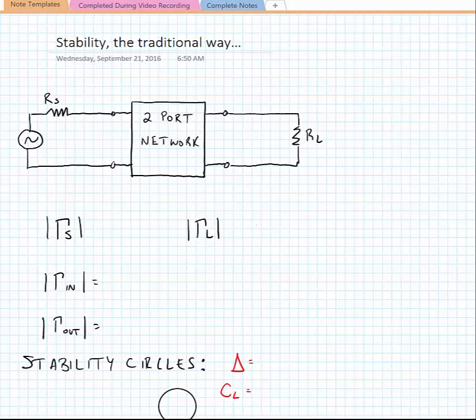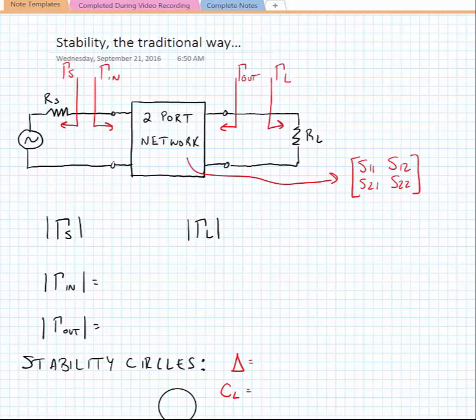In this lecture we're going to talk about stability the more traditional way. This is what we calculate if we only have a two-port network representation of a transistor amplifier. In our two-port network representation we might have an S-parameter matrix.